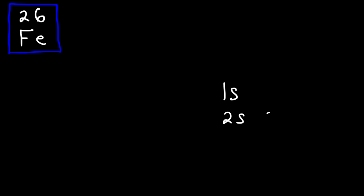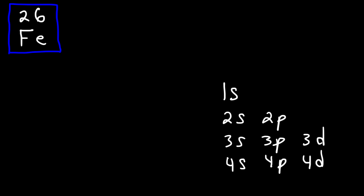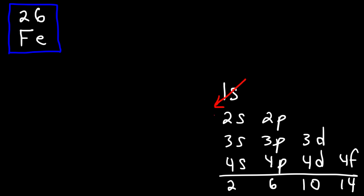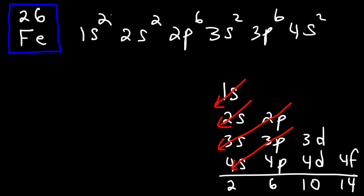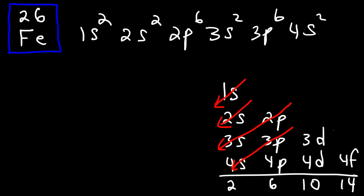The electron configuration for iron uses the sublevels 1S, 2S, 2P, 3S, 3P, 3D, and 4S. Starting: 1S2, 2S2, 2P6, 3S2, 3P6, 4S2 — that gives us 20 electrons. We need 6 more, so we continue to the 3D sublevel and stop at 3D6. That is the electron configuration for iron metal.